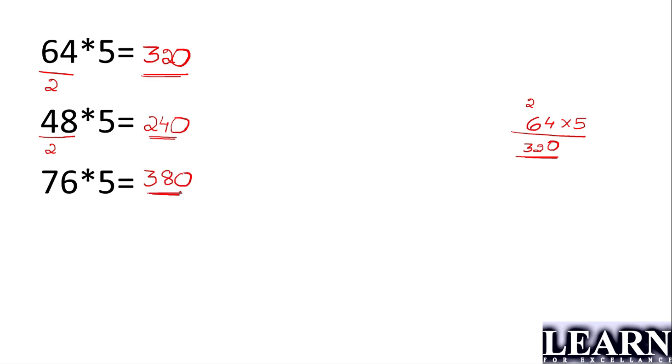Now let's look at a 3 digit number: 124 multiplied by 5. What is half of 124? If I divide it by 2, it will be 62, and add one 0 at last. The number is 620.